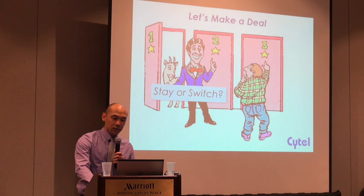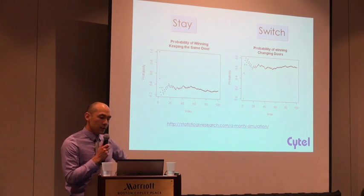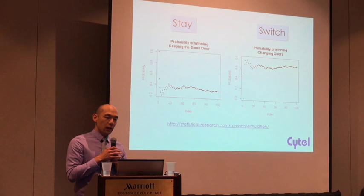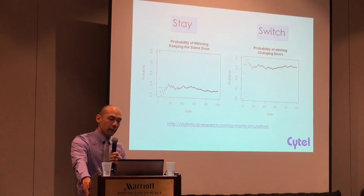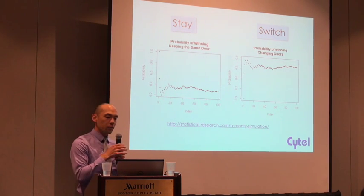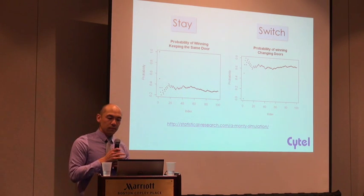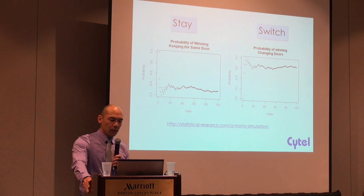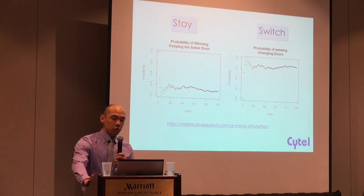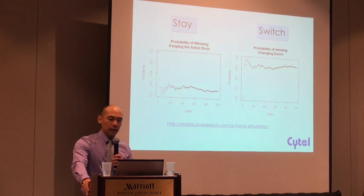But for those who decided to stay — which I think is most of you — you can show by simulation that the switching strategy has twice the probability of winning the car. This simulation repeats the same game a hundred times and plots the average probability of winning. On the left we have the stay strategy, always staying with the same door; on the right we have the switching strategy. It's a simple example showing that sometimes our intuitions about probability can be easily mistaken, and building a model and using simulation tools can give us the correct answer.